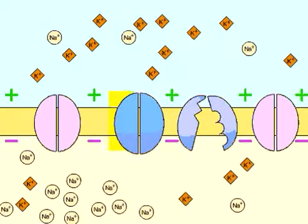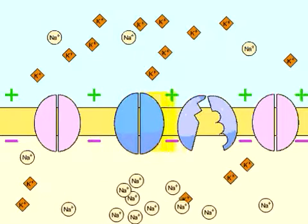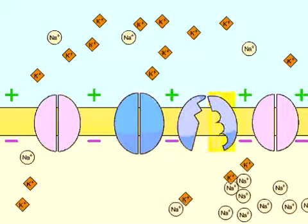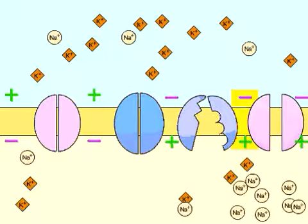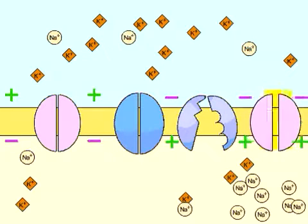Meanwhile, the sodium ions inside the cell have diffused to adjacent areas, causing a slight change in the polarity of the membrane ahead of the action potential. This change in polarity causes the voltage-gated sodium channels along this part of the membrane to open. Again, sodium ions rush in, and the action potential spreads to the adjacent part of the neuron.